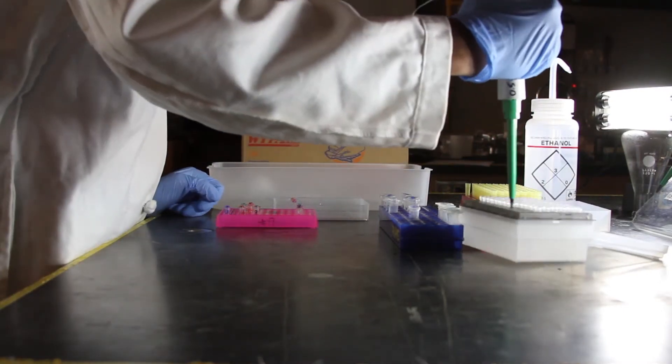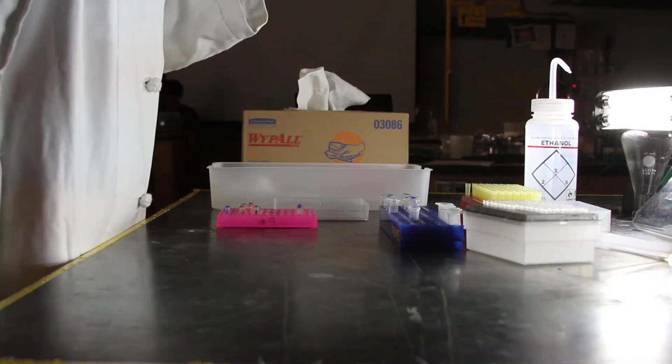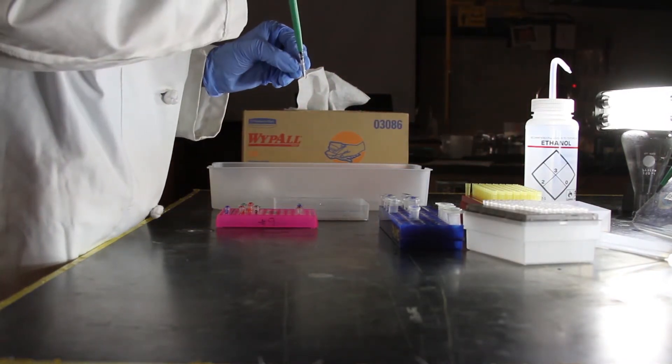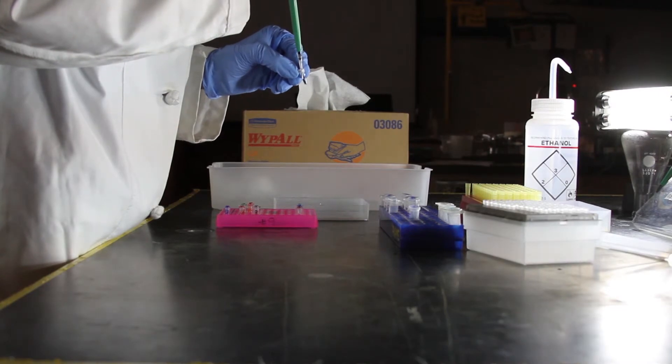The total volume in each tube should be approximately 50 microliters. Mix well by pipetting slowly up and down 5 times. Be gentle and do not vortex.